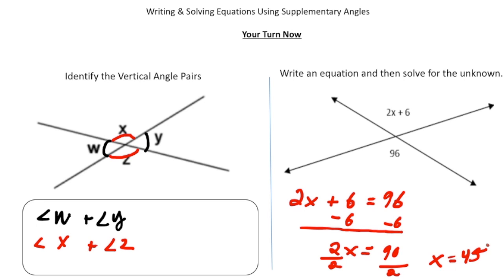Now it's always important, if you can, to plug it in and make sure it works. So I'm going to plug in 45 here. So 2 times 45 plus 6 should equal 96. Well, we know that 2 times 45 is 90, and 90 plus 6 is 96. So we know it's right. All right. How'd you do?